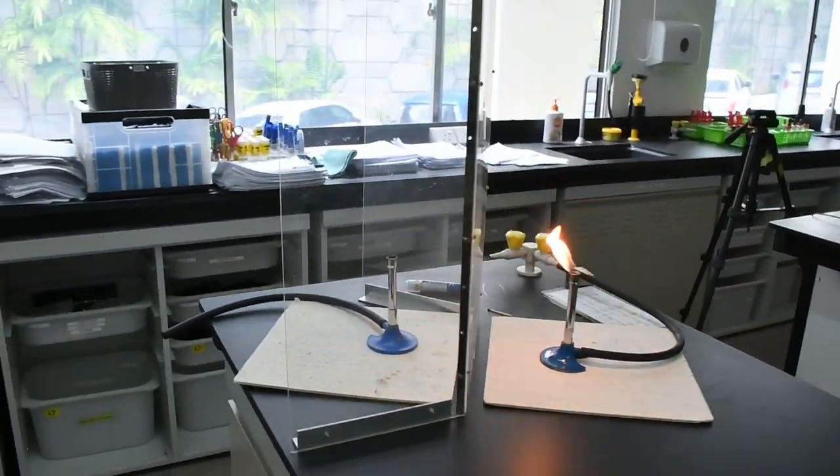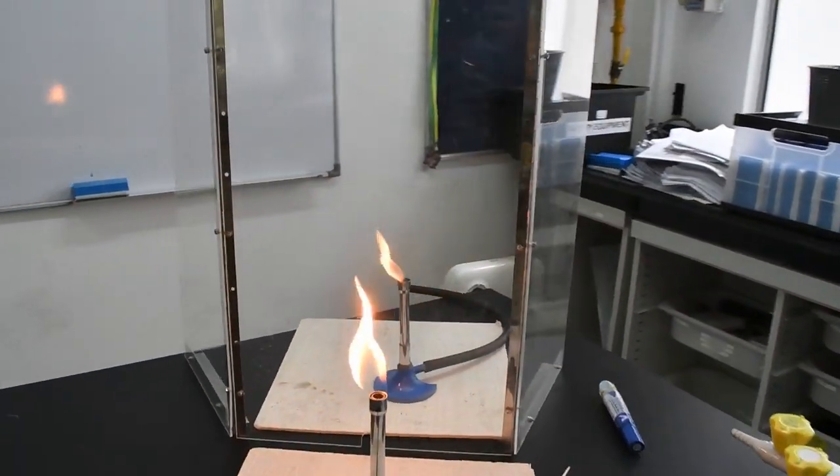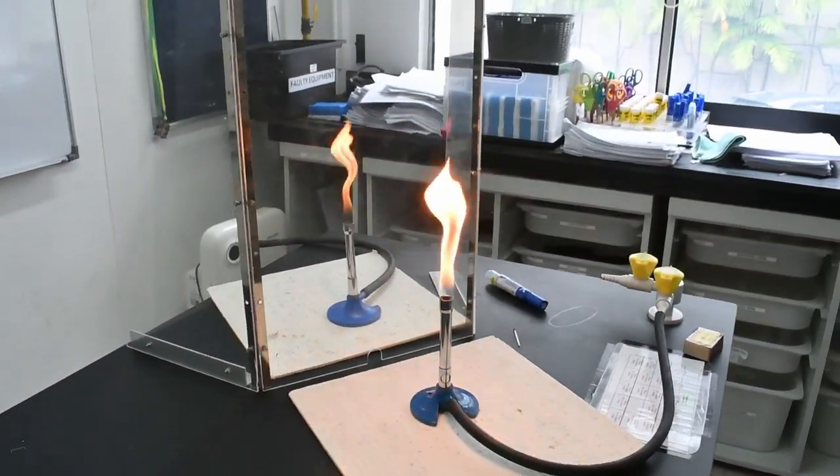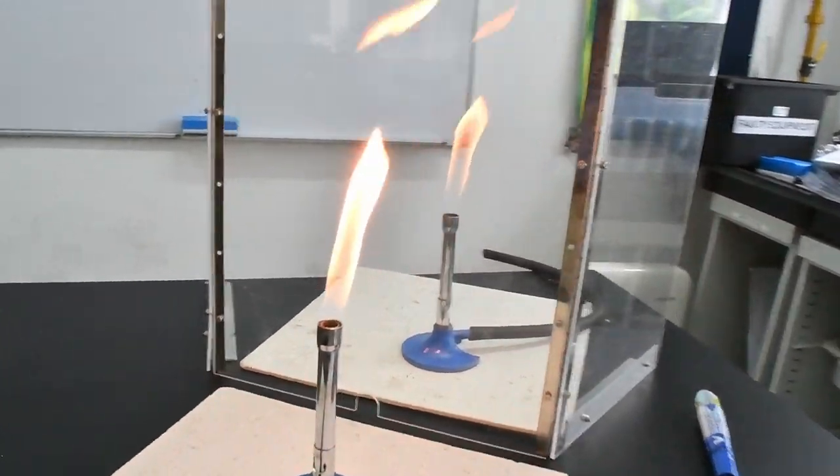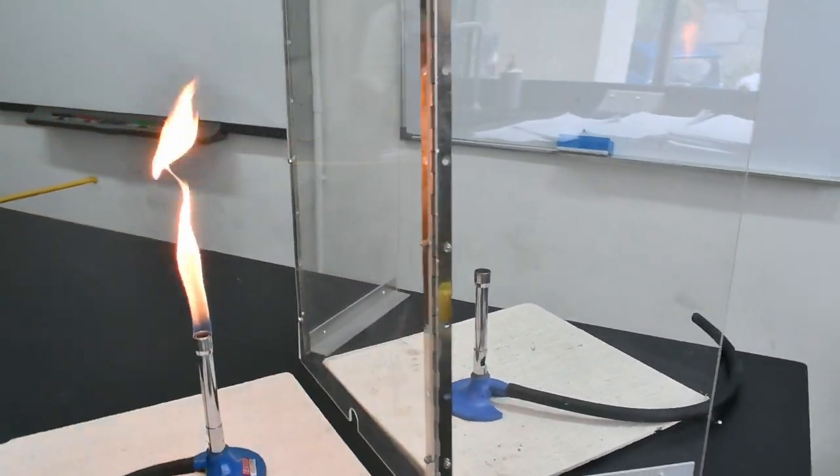And this is how the illusion worked. They'd have a chair at each end of a corridor, and in a hidden chair, someone would sit. So in this case, I have two Bunsen burners, one burning, one not burning. But the reflection of the burning appears in the other one.